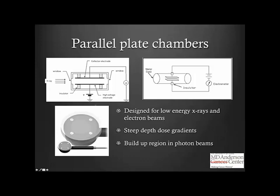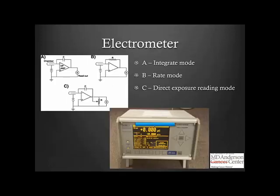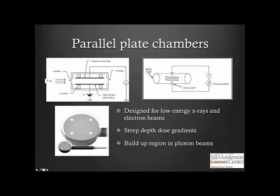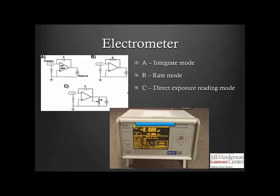The electrometer components connected in the feedback loop vary depending on its use. With a capacitor in the loop, the electrometer constantly collects charge in an integrated mode, and we measure the accumulated capacitance. In rate mode, a resistor is used instead, allowing monitoring of the dose rate or current generated by radiation incidence. For direct exposure reading, providing real-time feedback of dose or exposure as in a Geiger counter scenario, a different electrometer configuration is used.